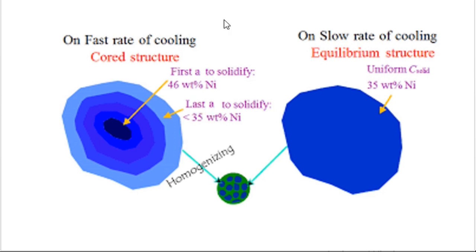To address the coring issue, a heat treatment process called homogenizing is used. The material is heated to a particular temperature and held there for a longer duration so that the nickel which could not diffuse earlier now gets a chance to do so. Heat treatment details are not part of the syllabus but are important for understanding solidification.